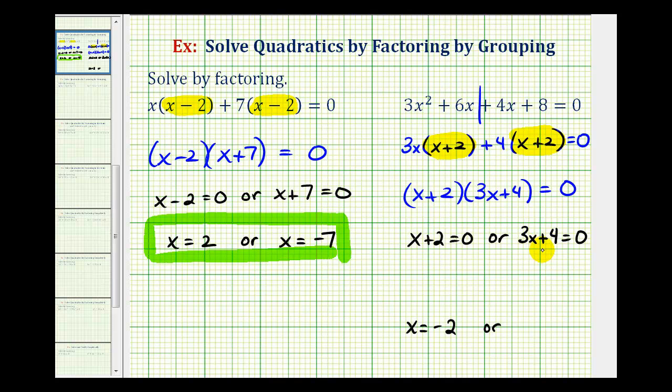And then to solve 3x plus 4 equals 0, we'd start by subtracting 4 on both sides. This would give us 3x equals negative 4. Divide both sides by 3. This would be 1x or just x. So we have x equals negative 4 thirds. So these are the two solutions to the original quadratic equation.